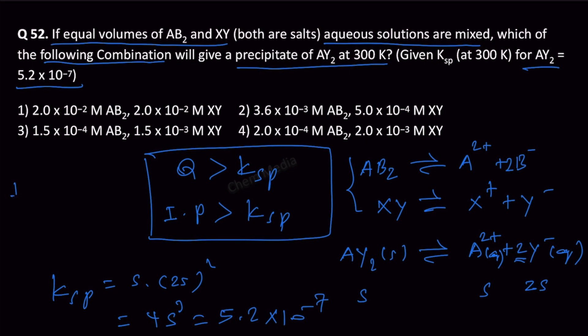When we write the ionic product, we write it in terms of concentration: [A²⁺] × [Y⁻]². The expression for the solubility product and the ionic product appears to be the same, but in the solubility product expression the molar concentration represents equilibrium concentration, whereas in the ionic product the initial concentration or concentration at time t is used.